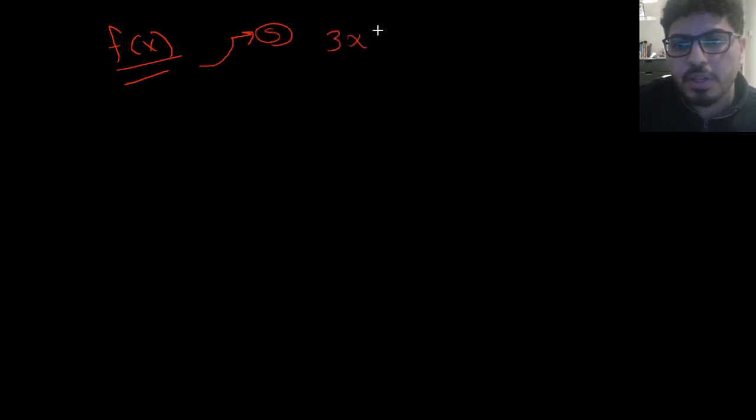Let's assume we have a function f of x. What are all the different forms in which the function f of x could appear? For example, f of x could be a scalar-valued function — something like 3x squared plus 2x.